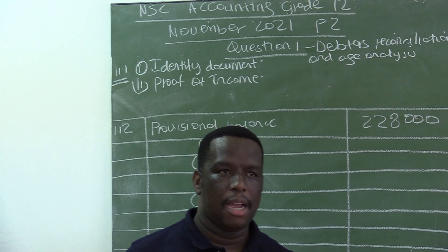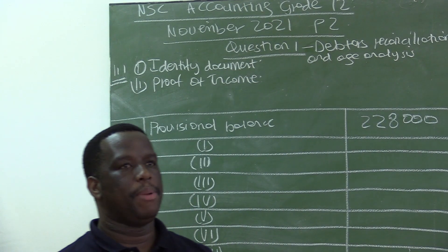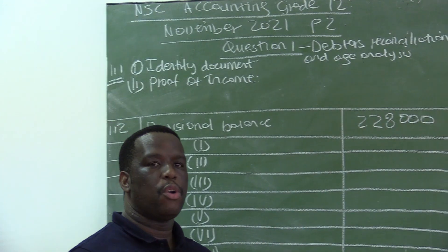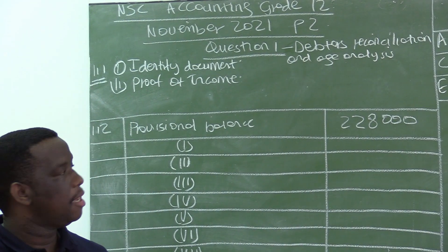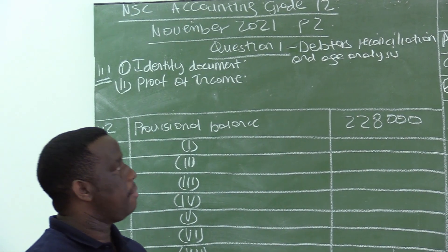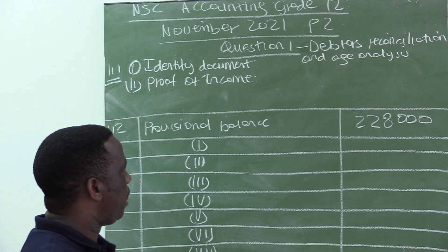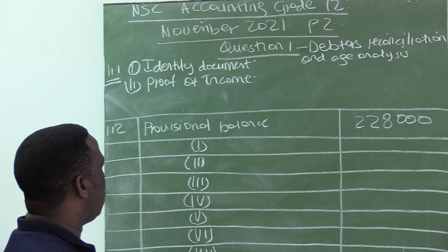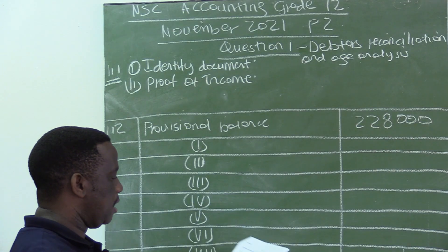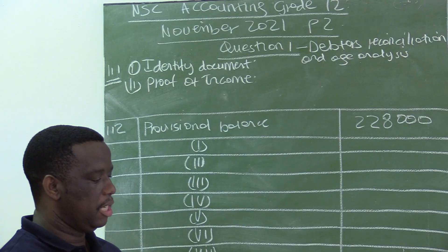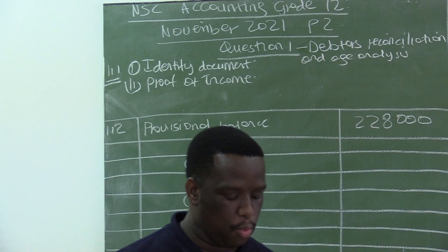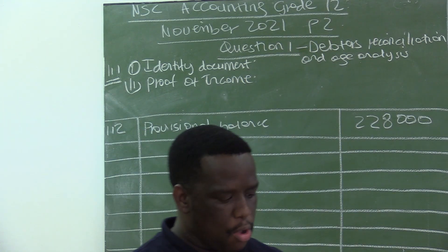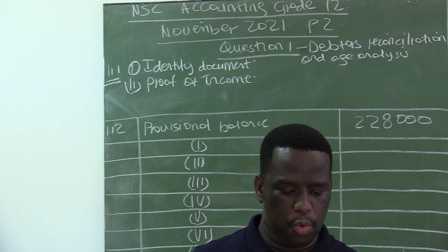There may be many other things you may check, like references. You may also check the credit history to know how this person has been conducting his or her previous credit accounts, so that you are able to make the correct decision. The question is only asking for two documents for 1.2.